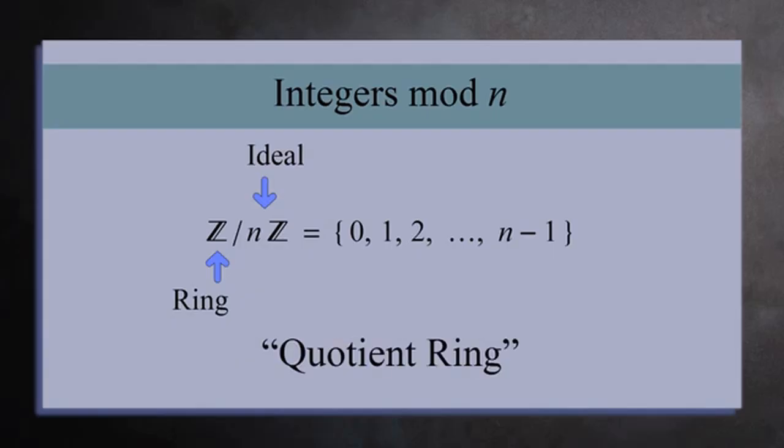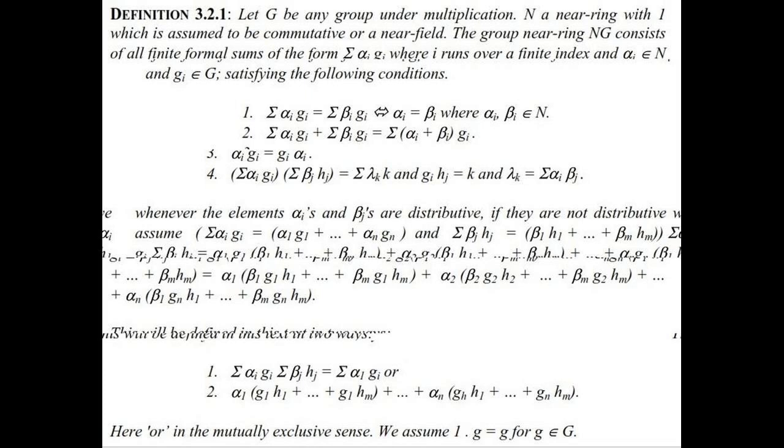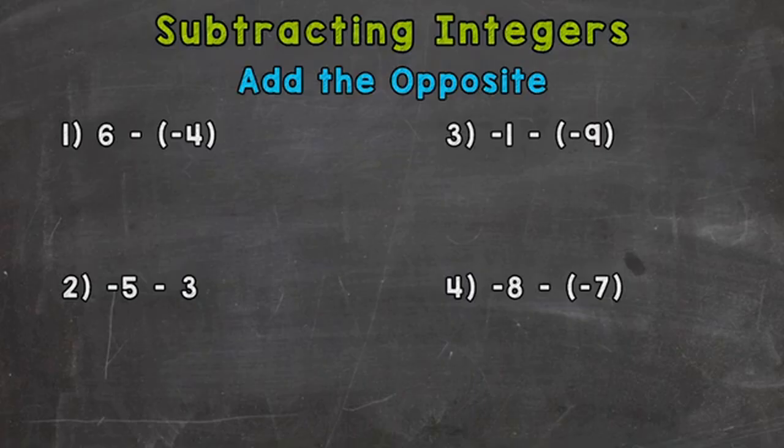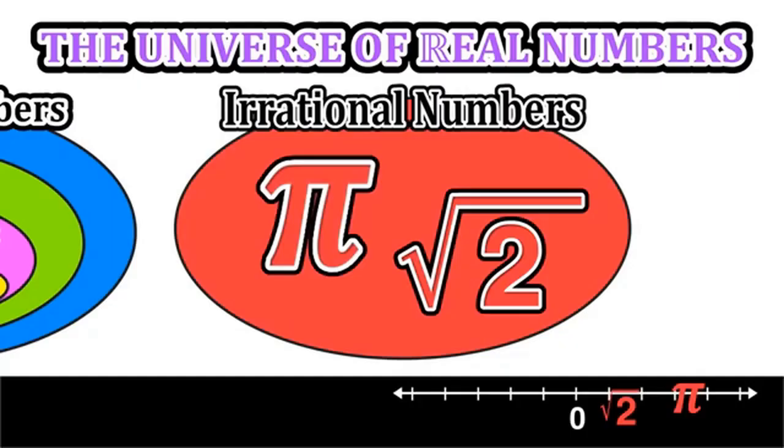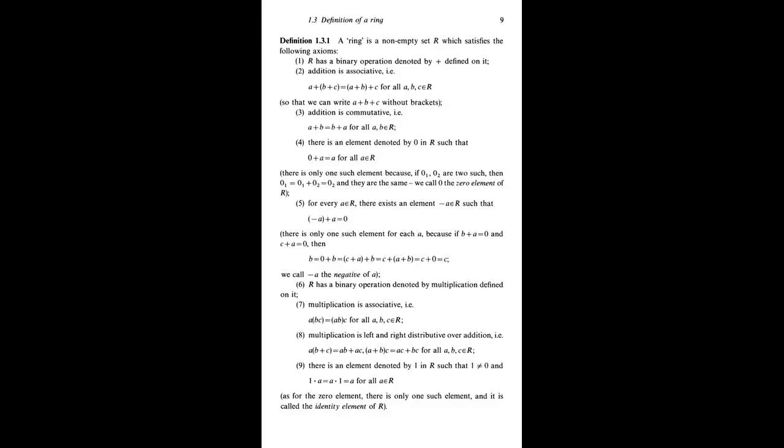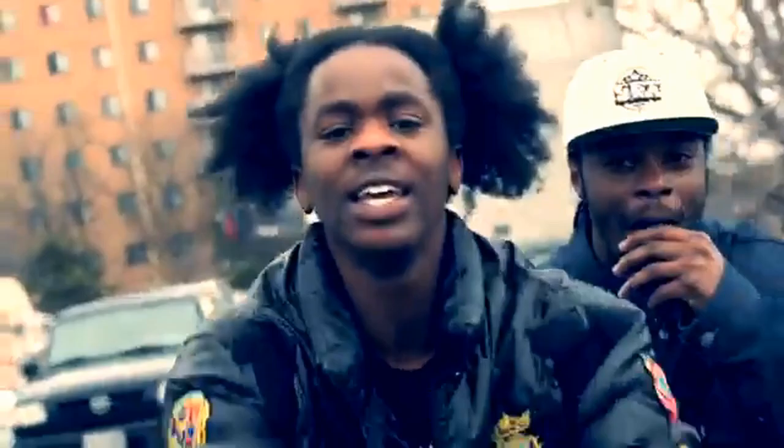A regular local ring is a UFD. The following is a chain of class inclusions that describes the relationship between rings, domains, and fields: rngs ⊃ rings ⊃ commutative rings ⊃ integral domains ⊃ integrally closed domains ⊃ GCD domains ⊃ unique factorization domains ⊃ principal ideal domains ⊃ Euclidean domains ⊃ fields ⊃ algebraically closed fields. A division ring is a ring such that every non-zero element is a unit.